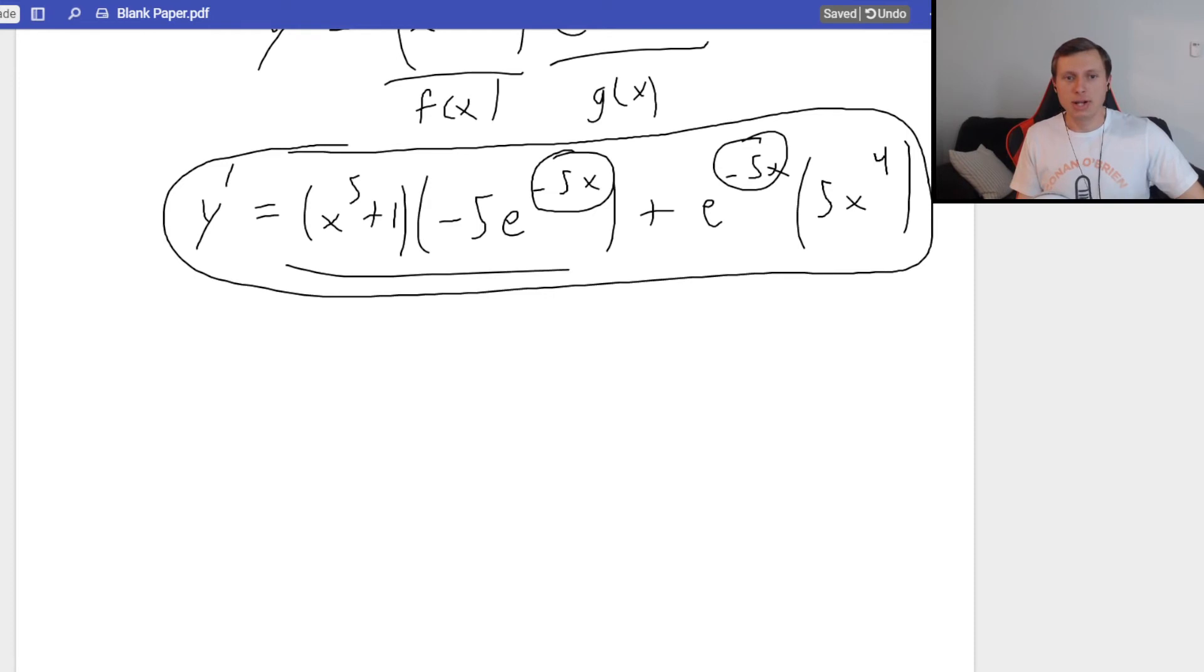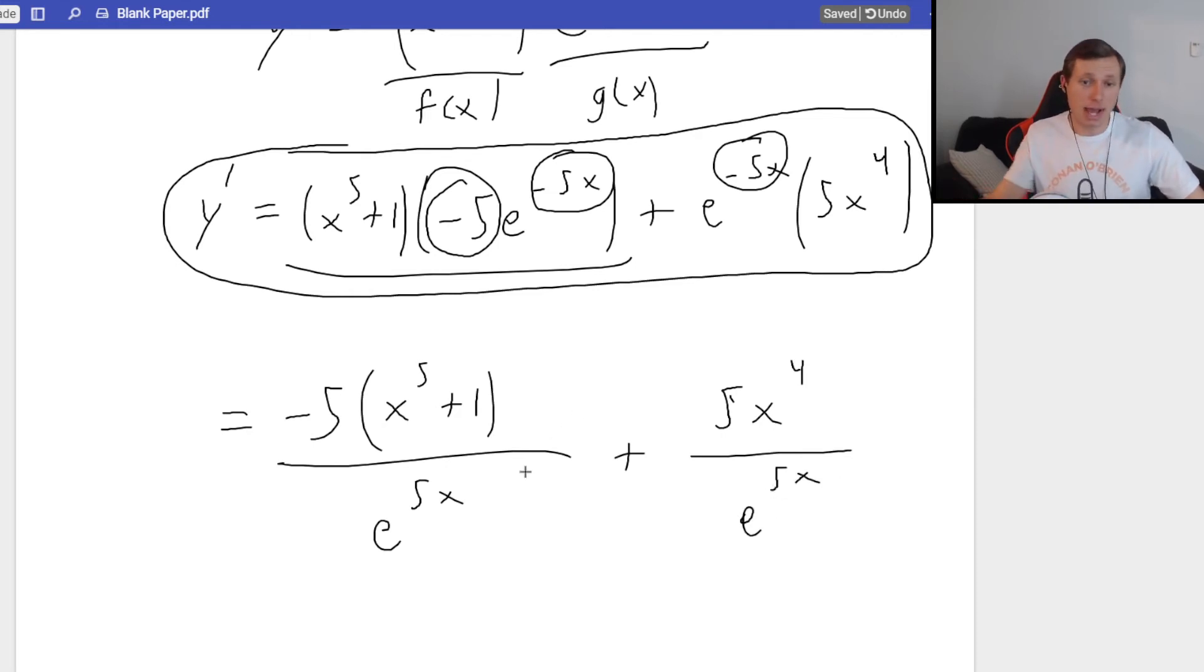So what does that mean? Number one, this first term here, I see this negative 5 here. That's a coefficient. I'm going to write that out in front. Negative 5 times the quantity x to the 5th plus 1. That's in the numerator. In the denominator, I now have e to the positive 5x power, right? Because that negative sign becomes positive in the denominator like this.